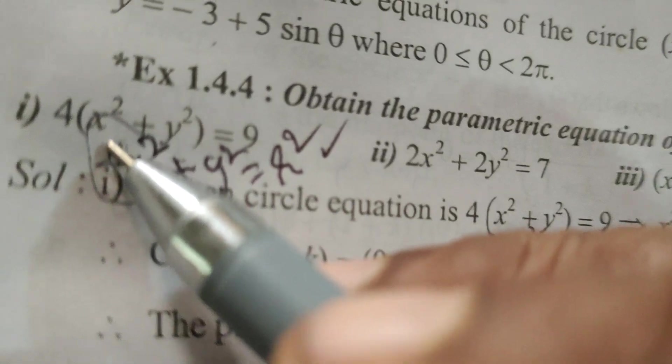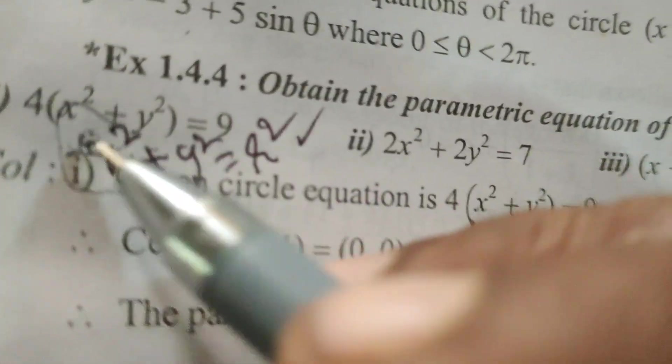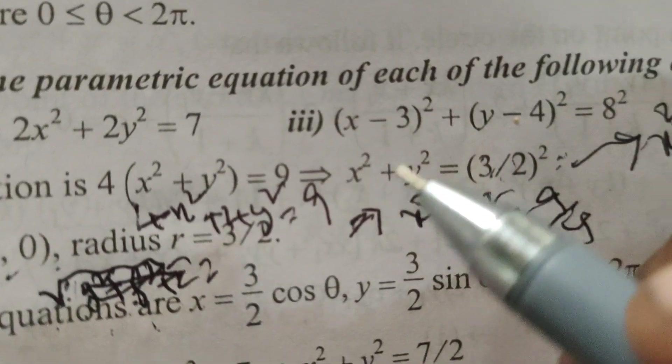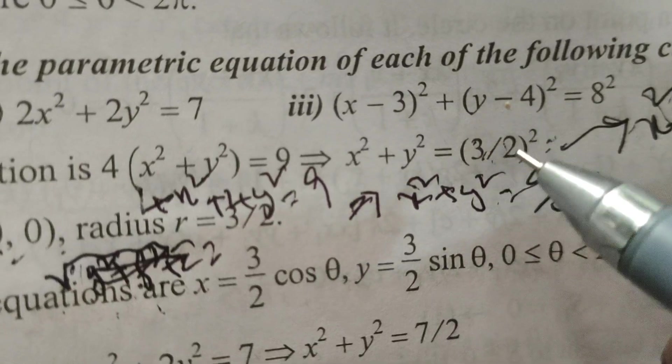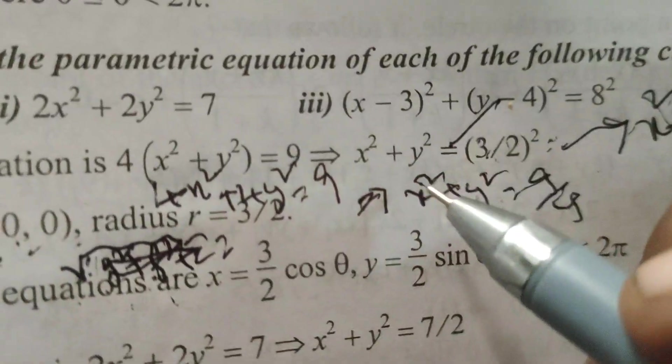Now, here write x square plus y square, 9 by 4. 9 by 4, again write 3 by 2, whole square.